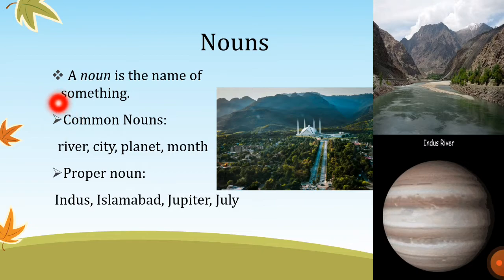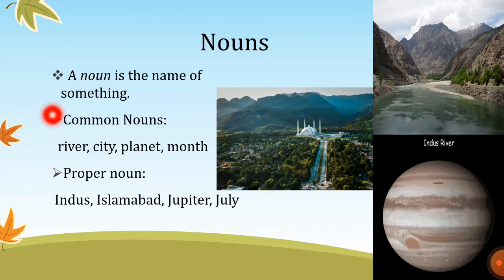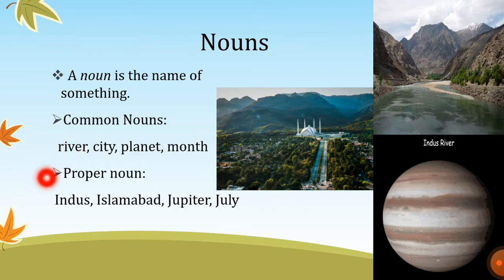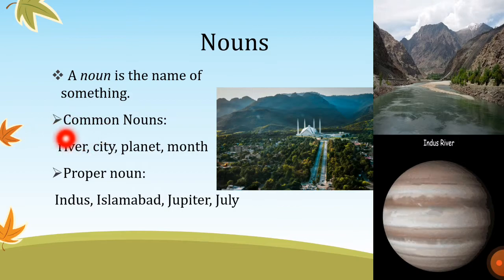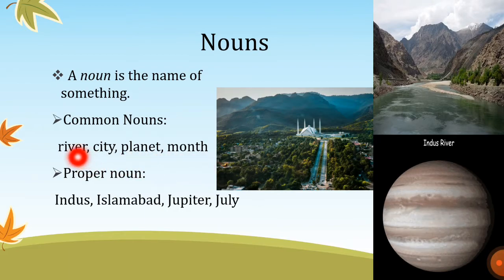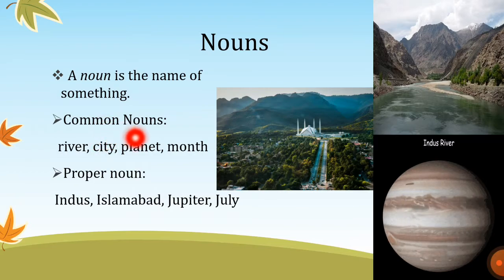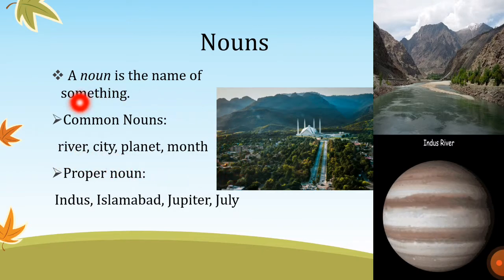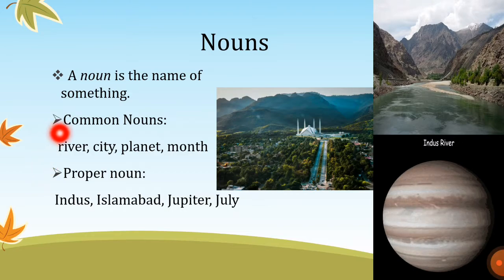There are two types of nouns we are going to study: the first type is common nouns, and the second type is proper nouns. Common nouns are general names given to things — for example, river, city, planet, month. Common nouns do not specify a particular river, city, planet, or month. They are just general names given to something, and they always start with a small letter.